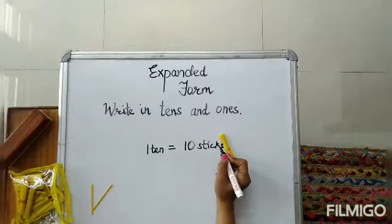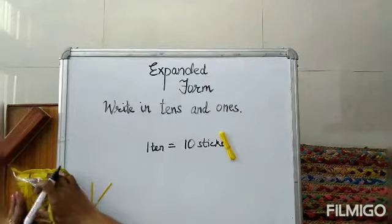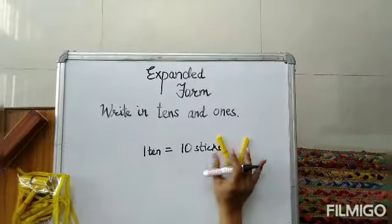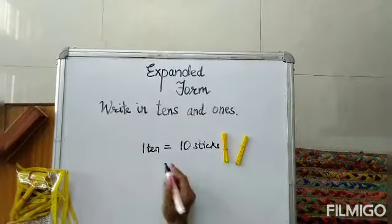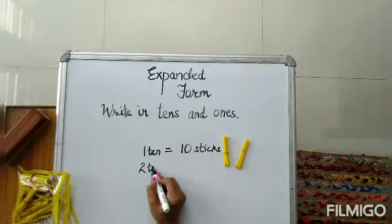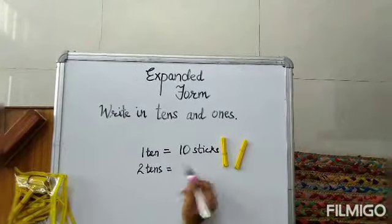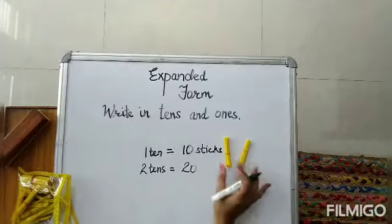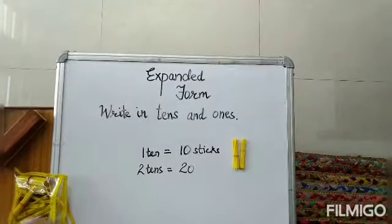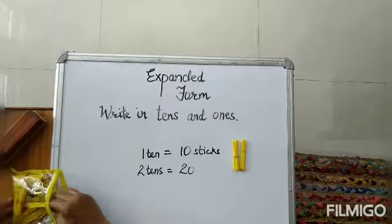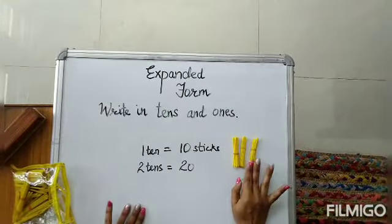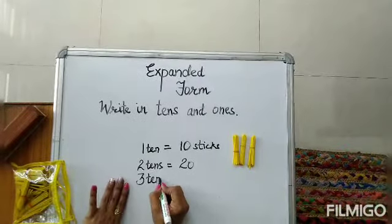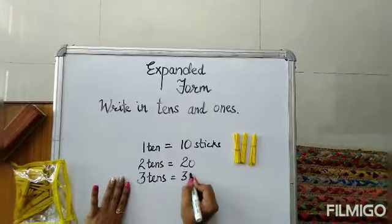Children, now look — there are 2 groups of 10s. When I say there are 2 groups of 10s, that means there are 2 tens. I am saying 2 tens, that means 20. If I say 3 tens, I have written 3 tens, that means 30.